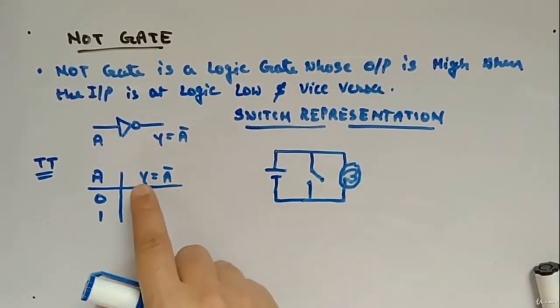In switch representation, this is how it will look. If the switch is closed, the bulb will get shorted by this line and the bulb will not glow. And if the switch is open, the battery will get connected to the bulb and the bulb will glow. So if the switch is open, the bulb will glow; if the switch is closed, the bulb will not glow. So this was the NOT gate — simple.